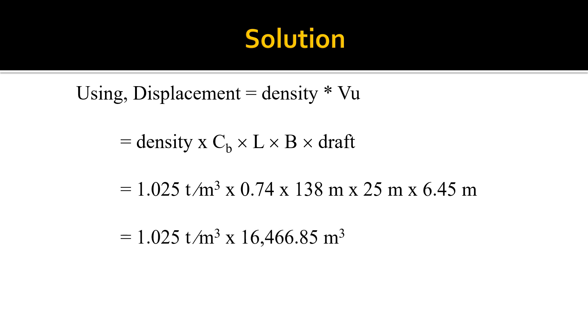When we multiply the VU times the density, we will get 16,878.52 as the displacement of that figure, of that vessel.